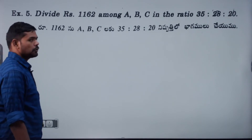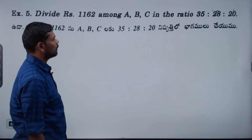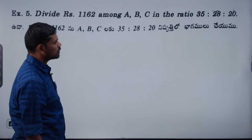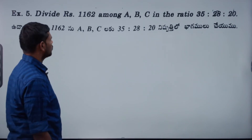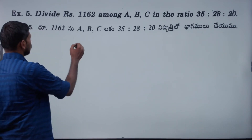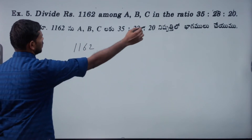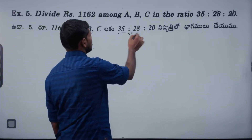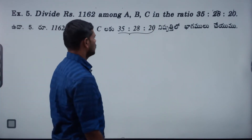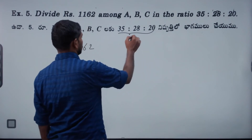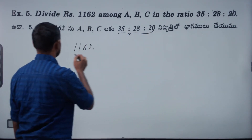Divide 1162 among A, B, C. The ratio is 35, 28, 20. Total parts: 35 plus 28 plus 20 equals 83 parts.